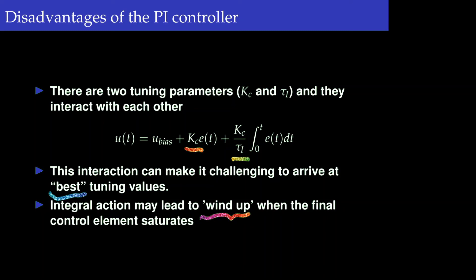In summary, the PI controller due to integral action has three main problems: first, the output may become oscillatory; second, there are more parameters to choose (Kc and tau_i); and third, the integral action may lead to a windup condition.